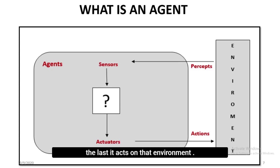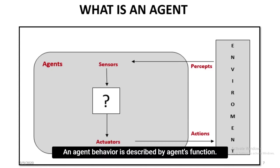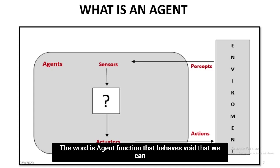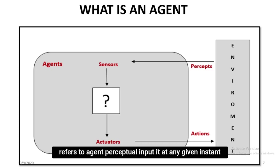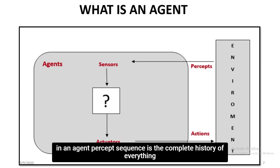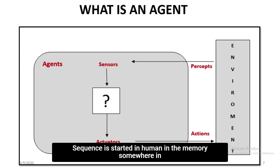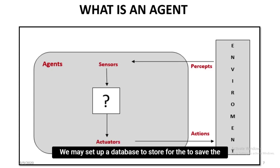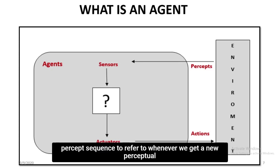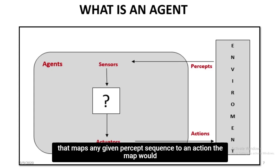An agent's behavior is described by an agent function that maps any given percept sequence to an action. Percept refers to the agent's perceptual input at any given instant. The percept sequence is the complete history of everything the agent has ever perceived. In a human, the percept sequence is stored in memory, somewhere in the brain. In a software system, we may set up a database to save the percept sequence to refer to whenever we get a new perceptual input.